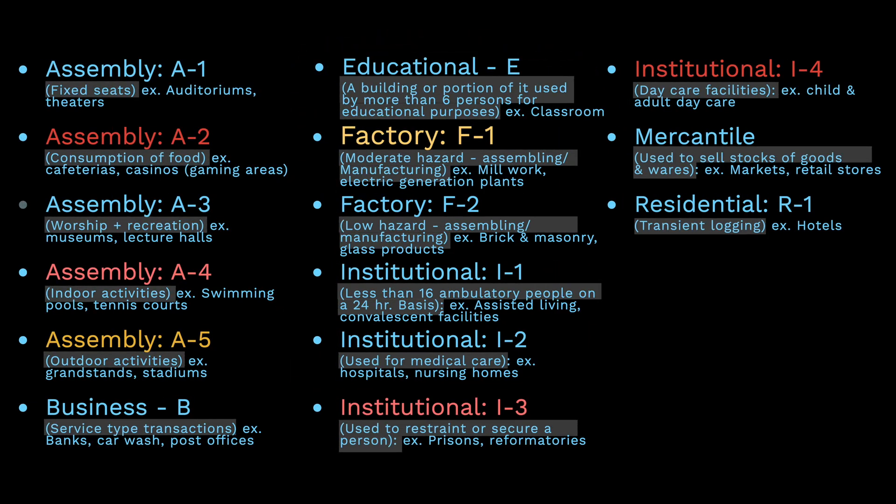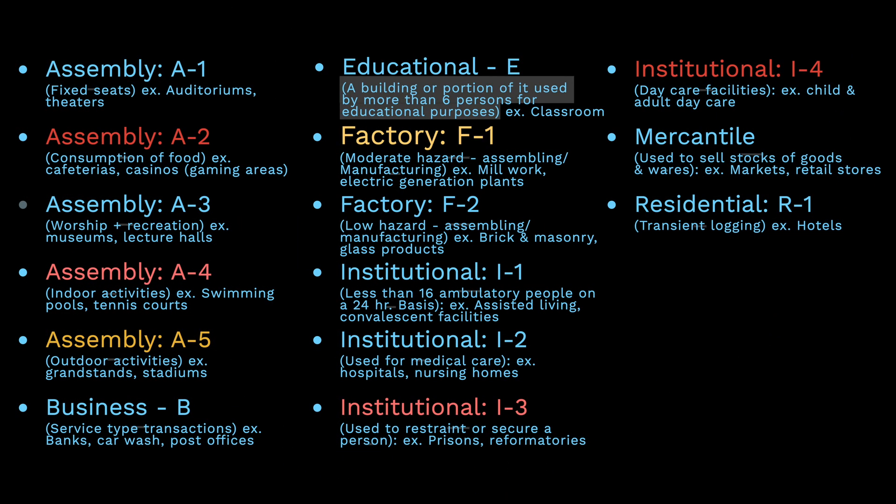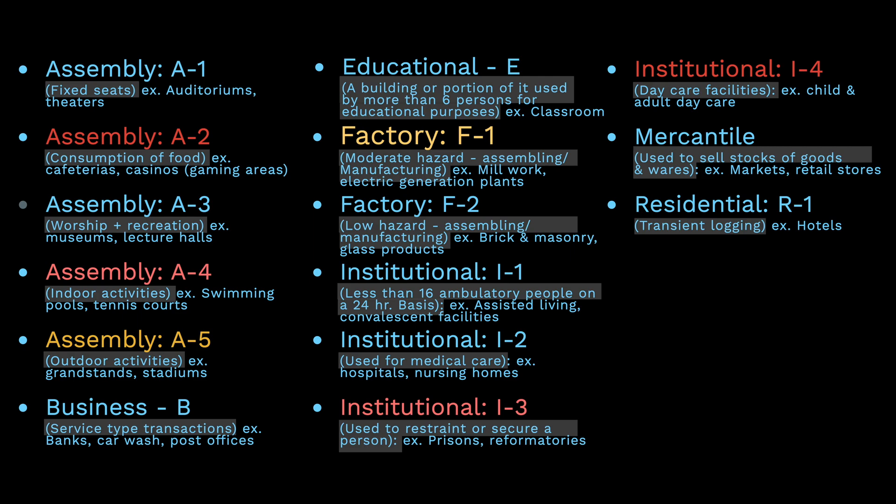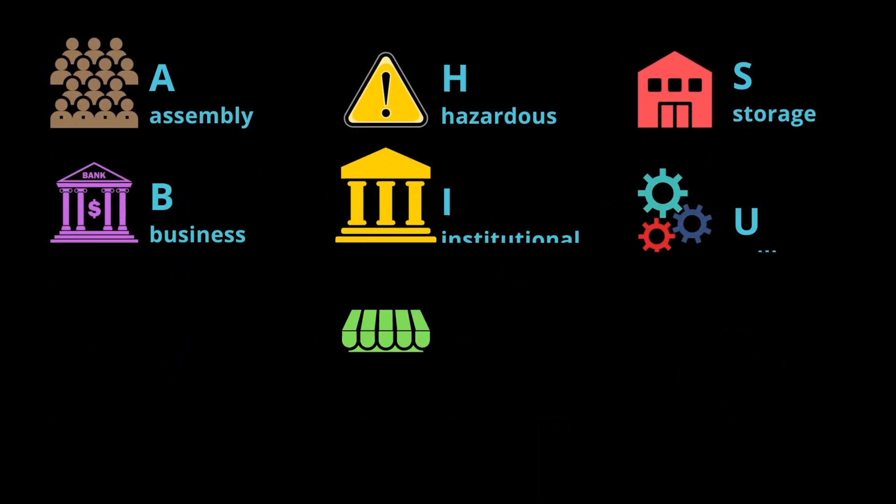You should also be aware of these particular considerations for each occupancy group. For example, in educational occupancy, one will consider a building or an interior space an educational occupancy if it serves more than six people at any one time for educational purposes through the 12th grade. Here are more considerations you should keep in mind. You can pause this video if you need more time to read each one of them.